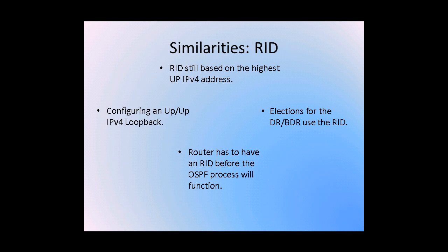One of the primary similarities between Version 2 and Version 3 is the use of IPv4 router IDs. Since the router ID is still an IPv4 based address, it can be configured in the following ways. The router ID can be configured with the highest loopback in an up-up state. If there is no loopback in an up-up state, or the loopback is already in use — as may be the case in a multiple OSPF environment — then the highest IPv4 address is used on an interface. If there are no up-up interfaces that can be used, the OSPF process will fail and require that you define a router ID manually. Elections for the DR and BDR will still use this router ID, not an IPv6 ID. Routers have to have an RID before the OSPF process will function.